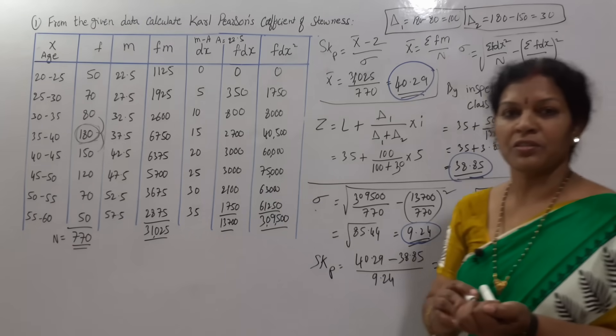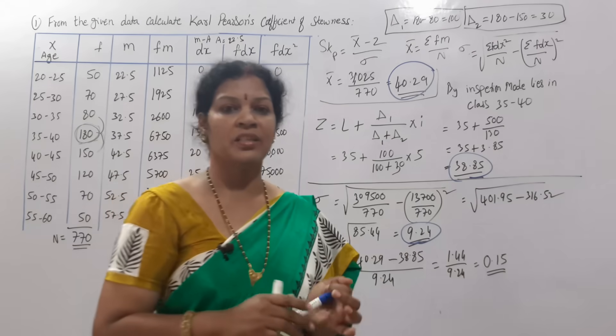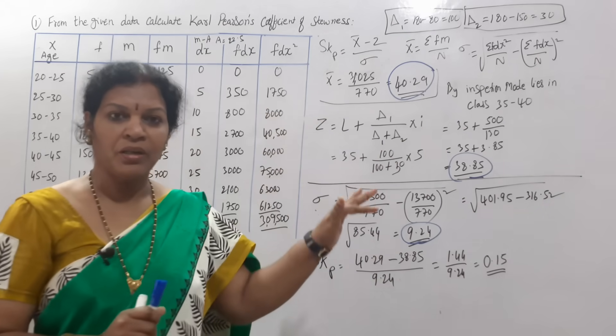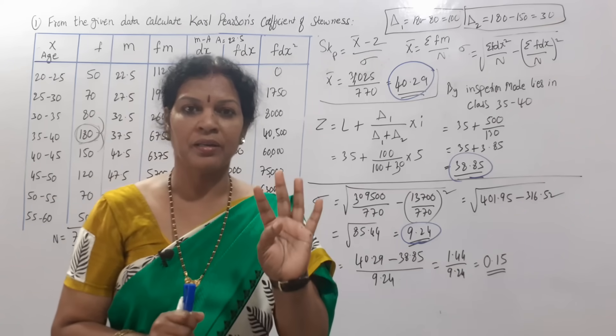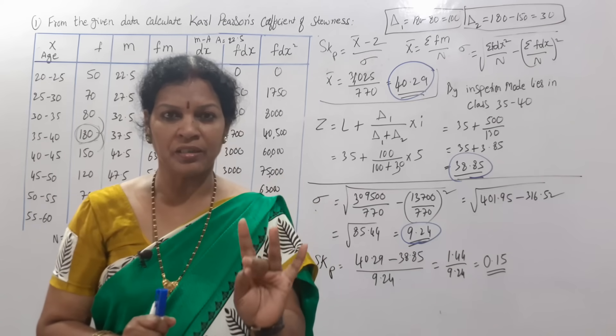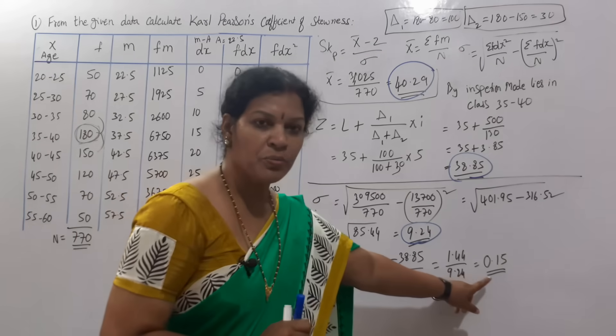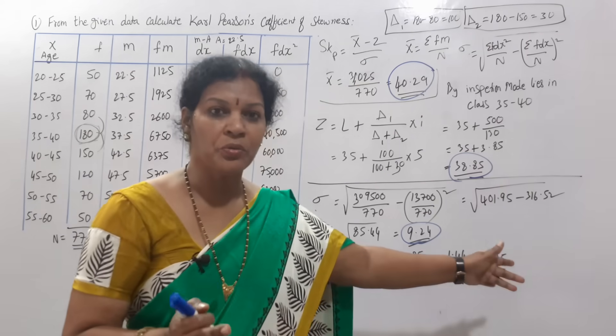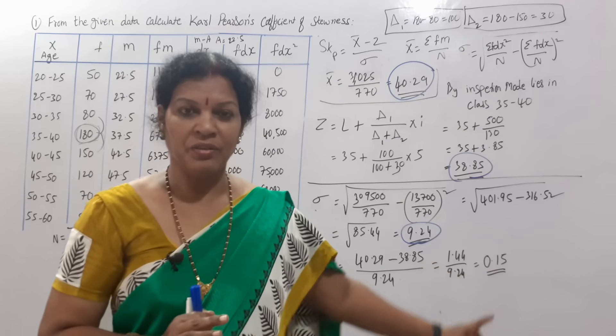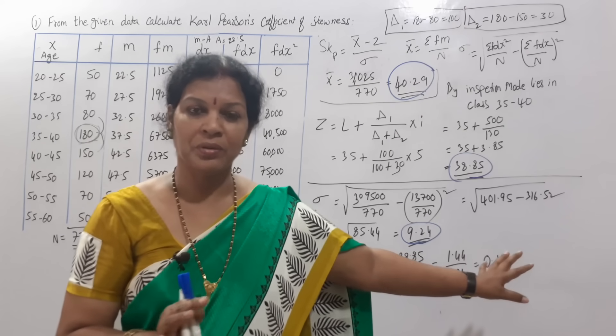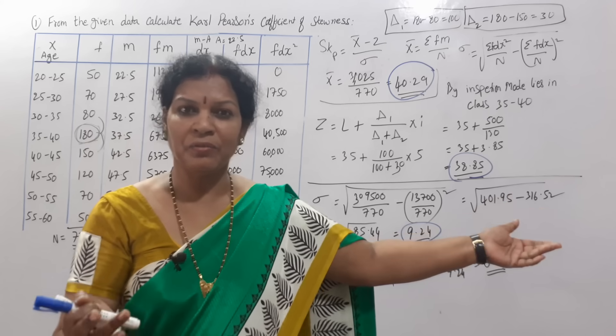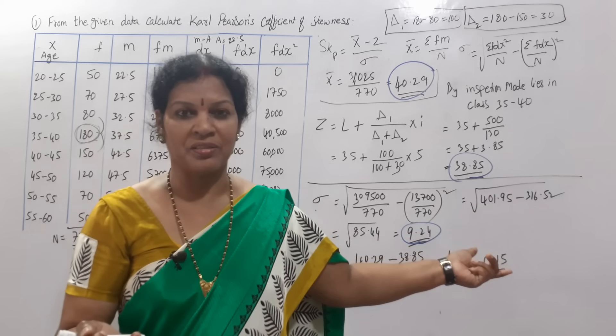It means Karl Pearson's skewness is saying that the distribution, whatever we have calculated, x bar and mode and standard deviation, everything is positive. The value is positive. Positive skewness this is. If the value is 0, we could have said something. And if the value is negative, then negative skewness.